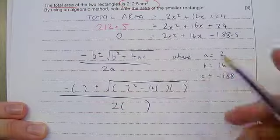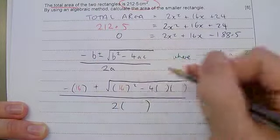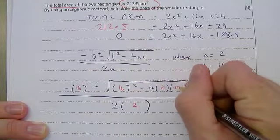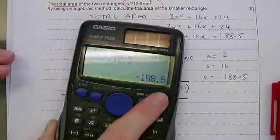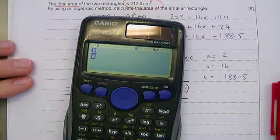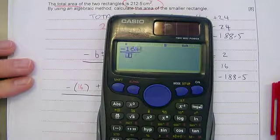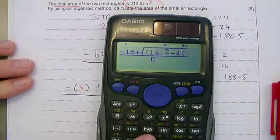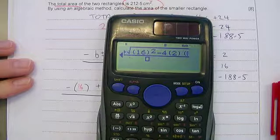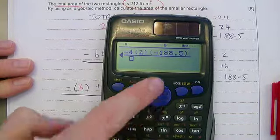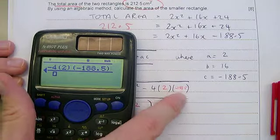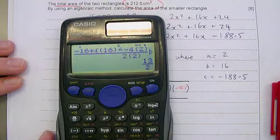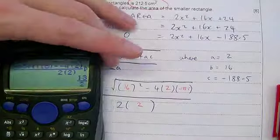So B was 16, so I was chucking 16 there, 16 there. Then A, so that's 2, 2. So here, minus 188.5. Start off by pressing the fraction button. So that's minus 16 plus the square root of 16 squared minus 4, and then 2. Just check your numbers. Minus 188, it is 188, isn't it? 0.5, yeah. And then over 2 lots of 2. Oh, so this was actually quite a nice number, 13 over 2.